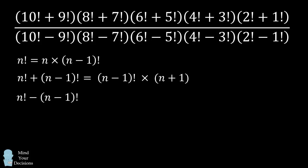A general term in the denominator is n factorial minus n minus 1 factorial. We can use the same approach and simplify this to the form where we have n minus 1 factorial times the quantity n minus 1.